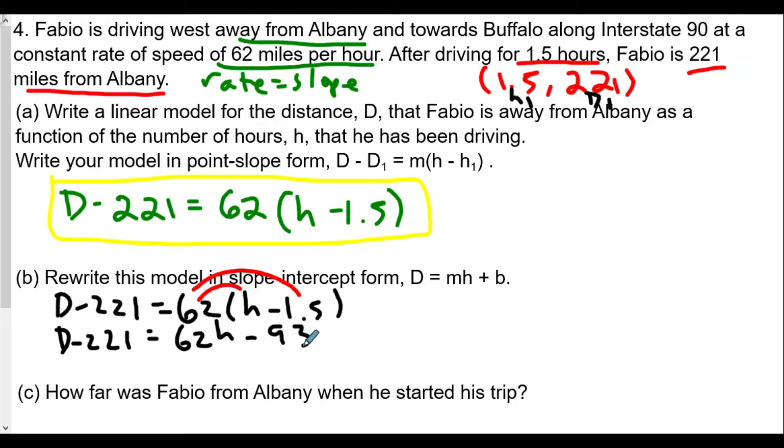Now we're going to add 221 to both sides, so that means D = 62h. Now 221 minus 93, so 221 minus 93, carry the 11 here, that's 128.